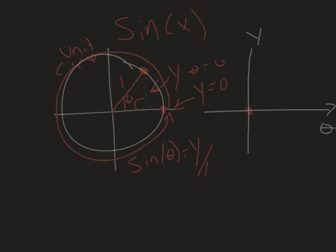So it goes through the origin when we start graphing it. At 90 degrees, or pi over 2 radians, my y coordinate is 1. Keep going around the circle; as I get to 180 degrees, my height is back to 0. Then as I go down to 270 degrees, I'm at negative 1. And then likewise when I come back to 360, I'm back to 0.